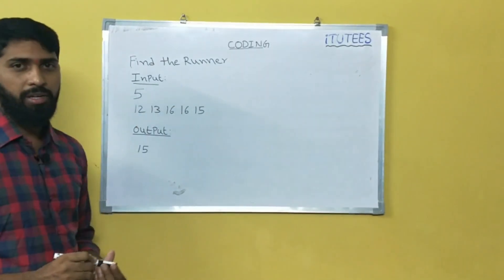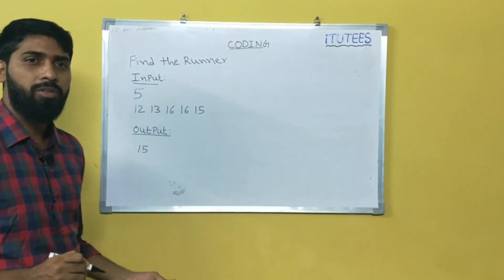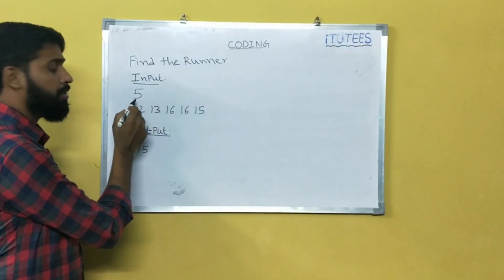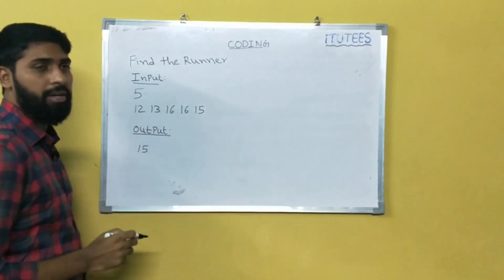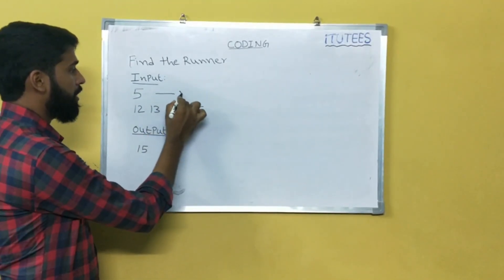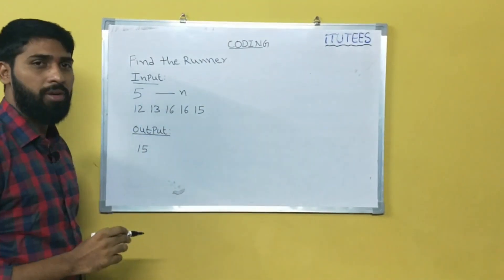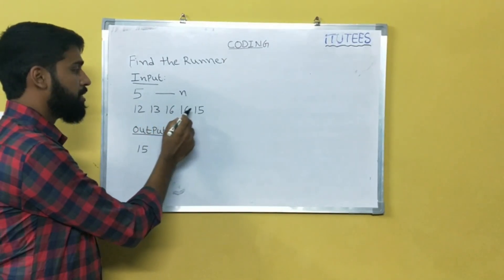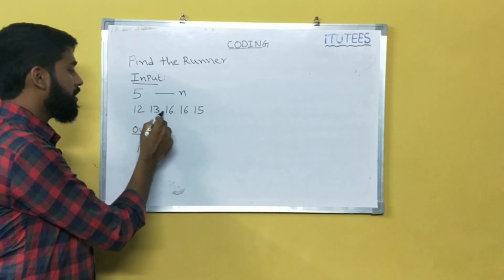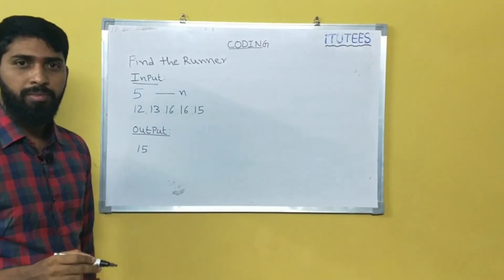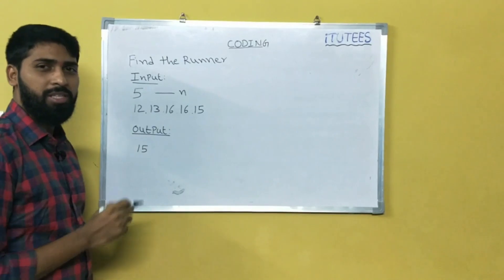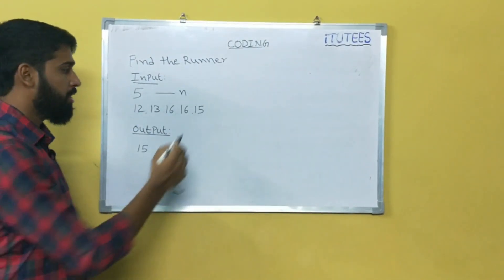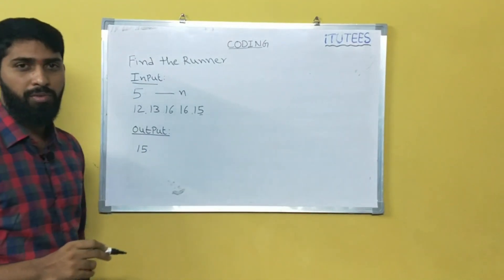So find the runner — find the runner means you are going to find the second highest value. In this, we are going to give the input number n. If I am giving 5 numbers: 12, 13, 16, 16, 15 — these numbers are separated by spaces. The expected output is the second highest number, which is 15. So the output is 15.